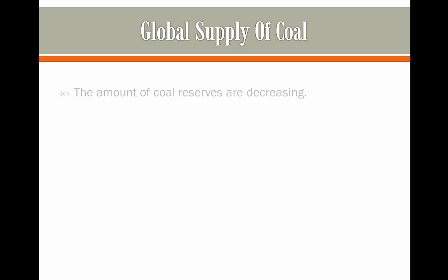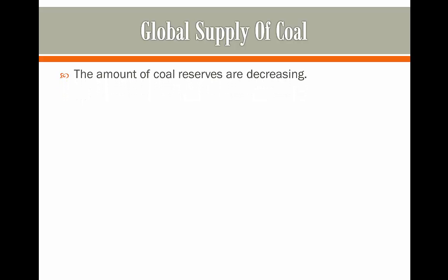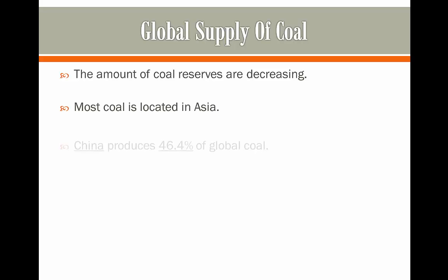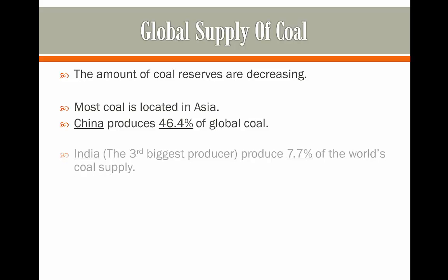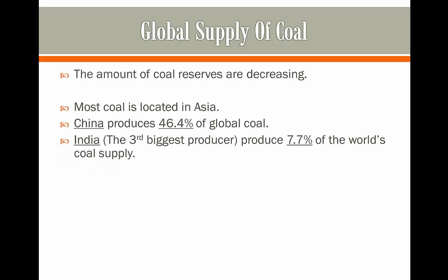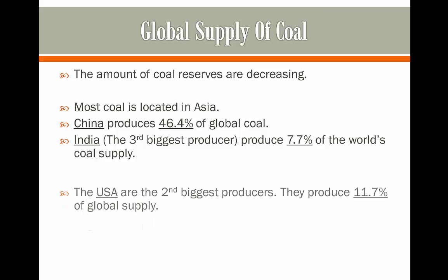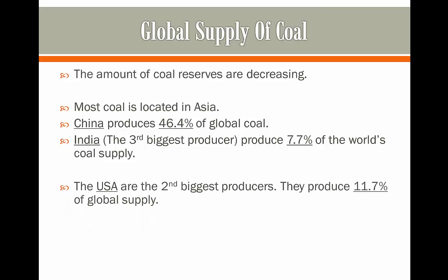The global supply of coal. The amount of coal reserves are decreasing. Most of the coal is located in Asia, and China, which is the main supplier, produces about 46.4% of global coal. India, which is the world's third biggest producer, produces 7.7% of this supply. The USA are not located in Asia, but they're the second biggest producers, and they produce about 11.7%.